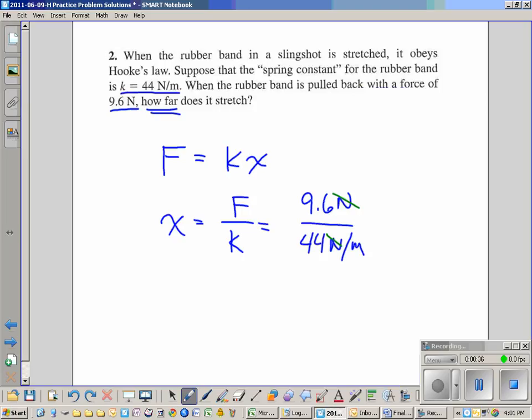We need to make sure we end up with x. Since x should be a distance, we're going to end up with meters. That is correct, because one over meters in the denominator gives us meters.